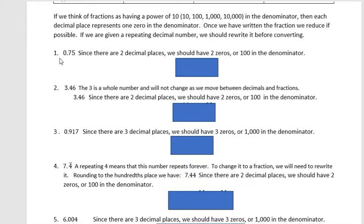In my first example, I have 0.75. Since there are two decimal places, we should have two zeros or 100 in the denominator. Always before I uncover the work, you could try it on your own to see if you're getting it right. I have 75 over 100. If I divide the top and the bottom by 25 to reduce it to lowest terms, that would be three-fourths.